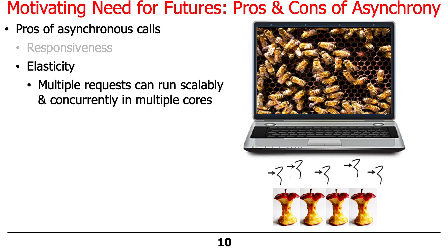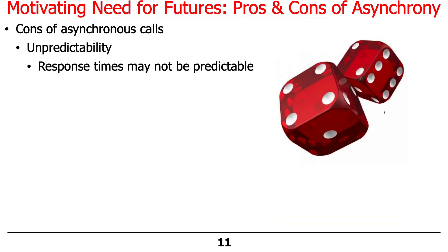You can set the wheels in motion, run things in the background, and conceivably, as the workload goes up — as long as you have enough cores to handle it — you can scale the system elastically and relatively transparently. Those are some of the benefits of asynchronous operations. Naturally, there are some downsides, one of which is unpredictability.